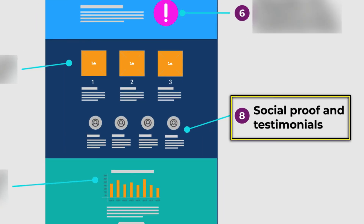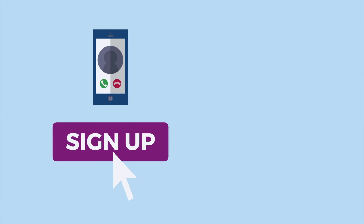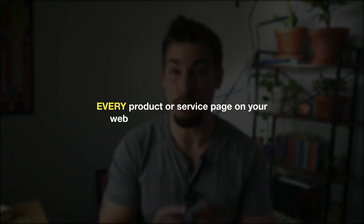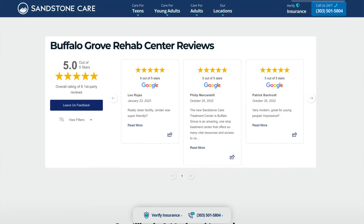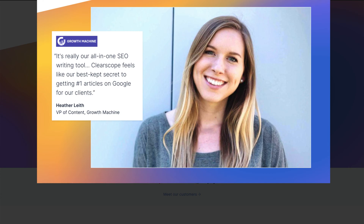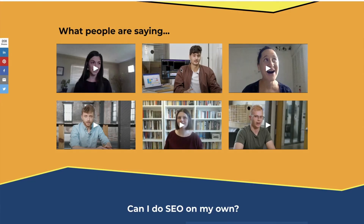Number eight: all service pages need more testimonials and social proof. I'm putting this in here twice because it's that important. Anytime you want the visitor to make a decision — click a button, call, schedule, or opt-in — you'll want to pair it with some social proof. You should not have one reviews page on your website. Every product or service page should be a review page. It could be embedding your Google reviews, showing logos, a custom quote with their picture, or probably the best testimonial: a short and sweet video testimonial.